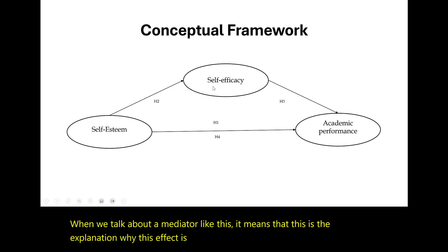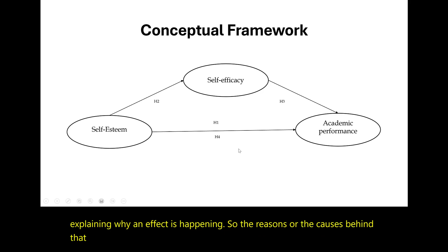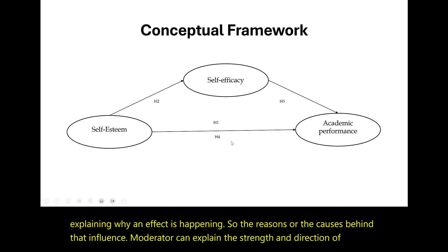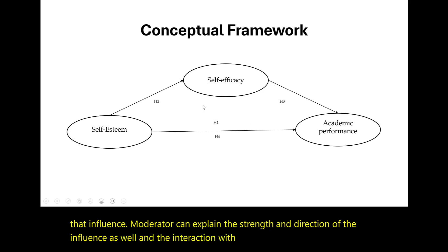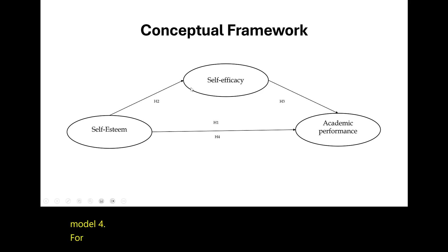A mediator variable explains why an effect is happening — the reasons or causes behind that influence. A moderator can explain the strength and direction of the influence as well, and the interaction with the independent variable. This is in brief Model 4 for the conceptual framework or mediation model.